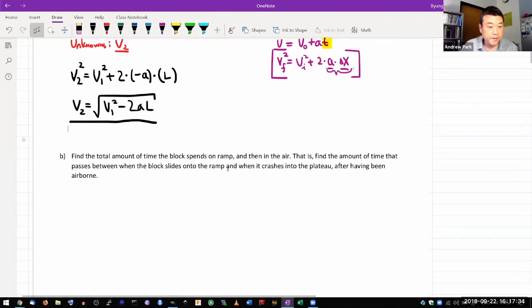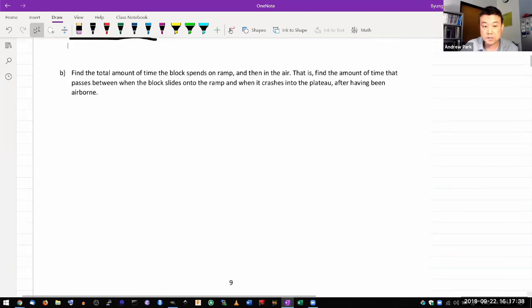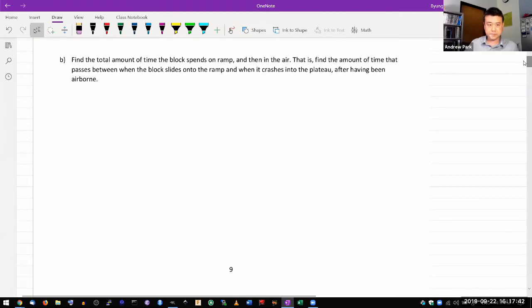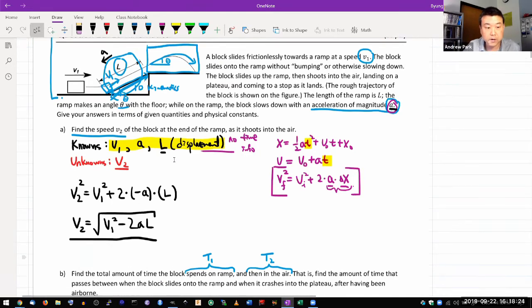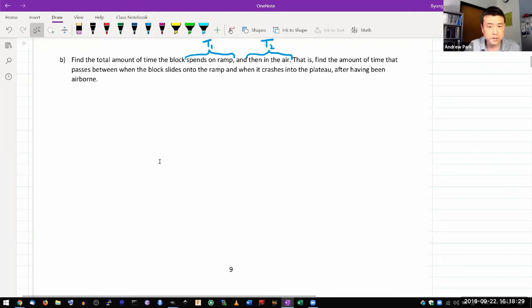Part B asks, find the total amount of time the block spends on ramp and then in air. The phrasing would make me consider breaking up this problem into two parts. There's the part of the time that the block spends on ramp, that'll be one part, let me call that T1. And then in air, this is a second and separate part. Because how I would handle this first part of 1D kinematics motion and the second part, the 2D projectile motion, the approach there will be completely different. So I would treat this as basically two-part problem.